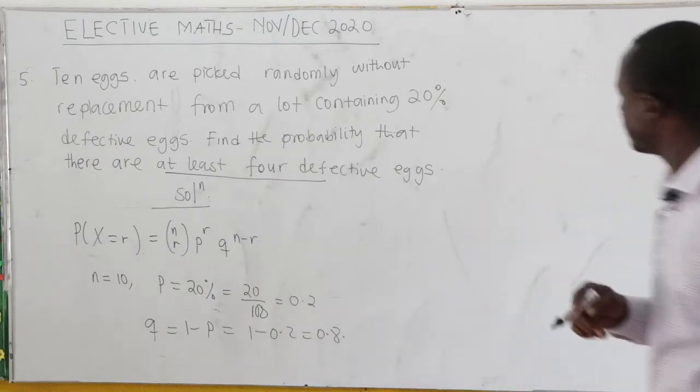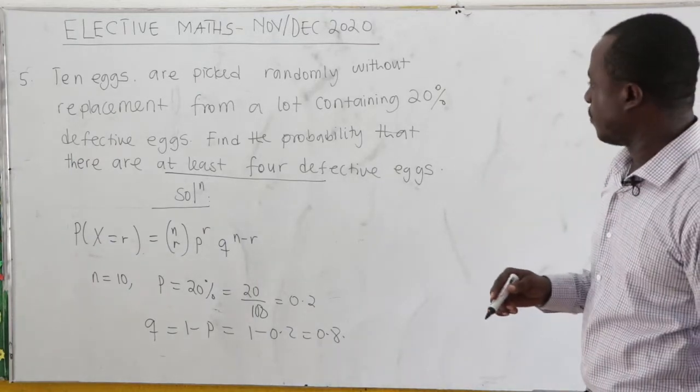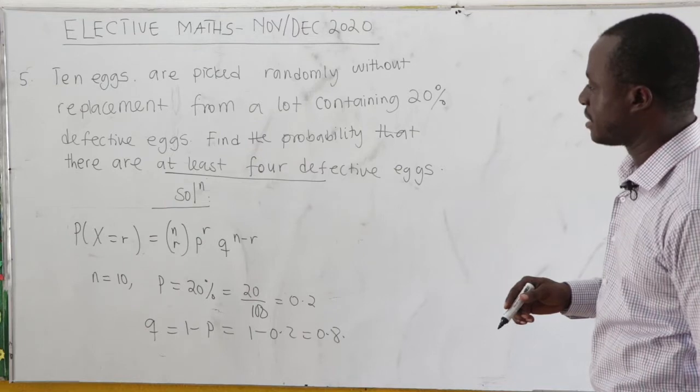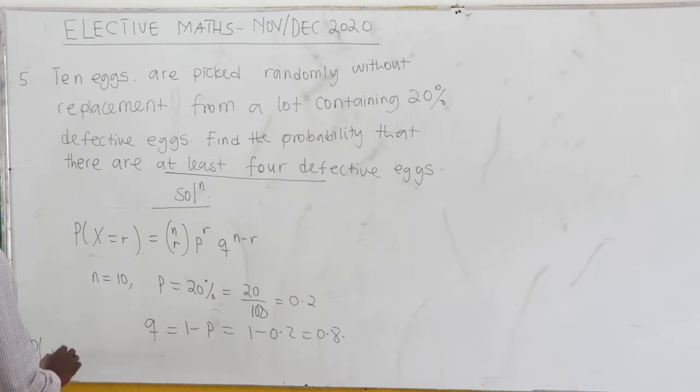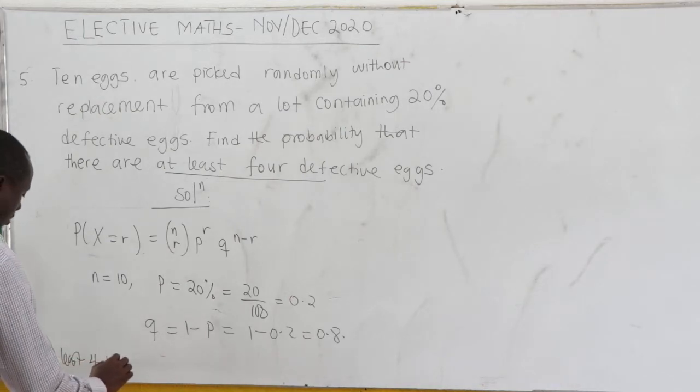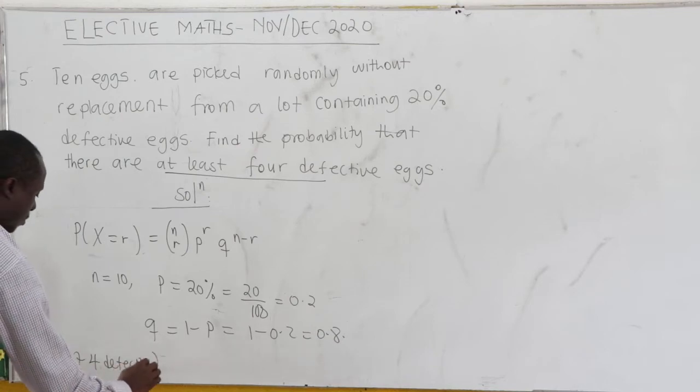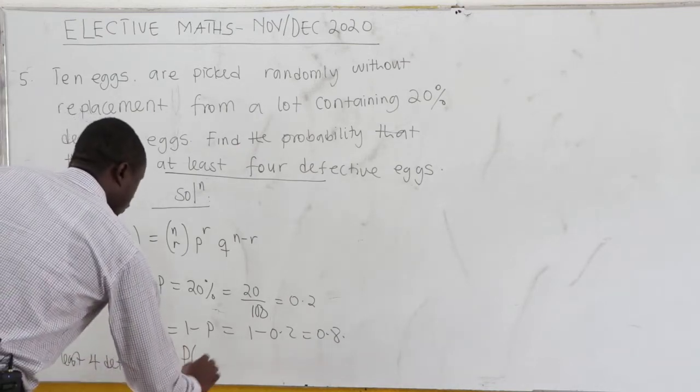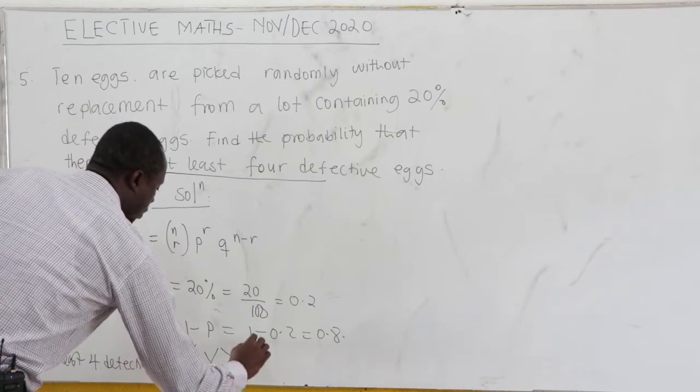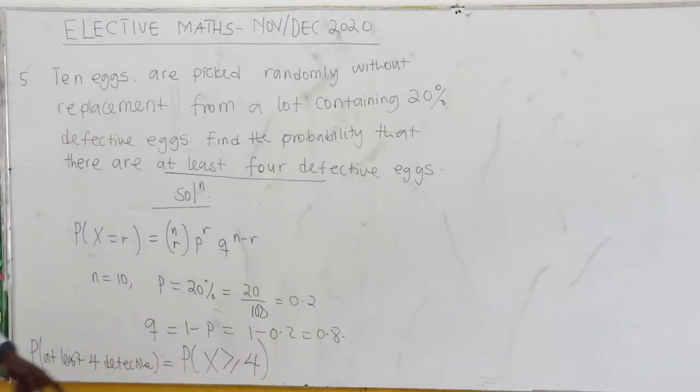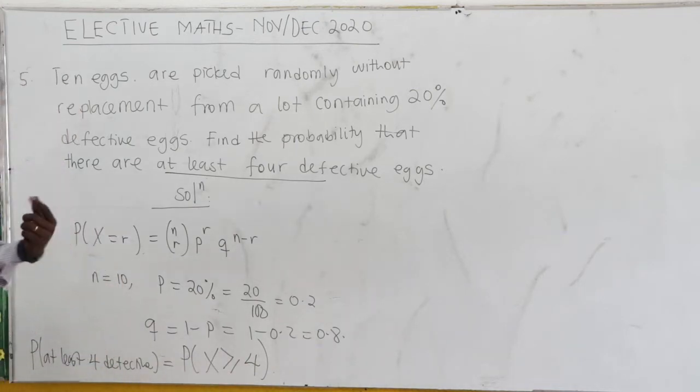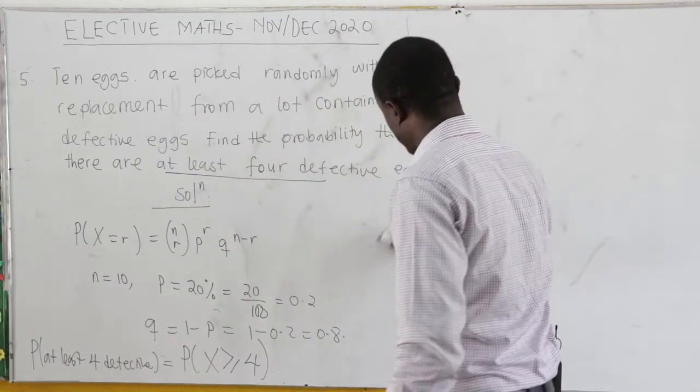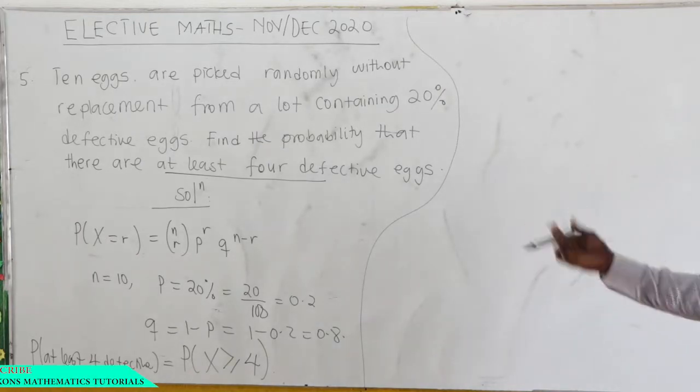What is the question saying? The question is saying that we should find the probability that there are at least 4 defective. So, probability at least 4 defective. This is the same as P(X ≥ 4). At least 4, that is X ≥ 4. So we consider 4, 5, 6, 7, all the way to 10. But that would be too much for us to handle. Nonetheless, if there's time, you can do that.